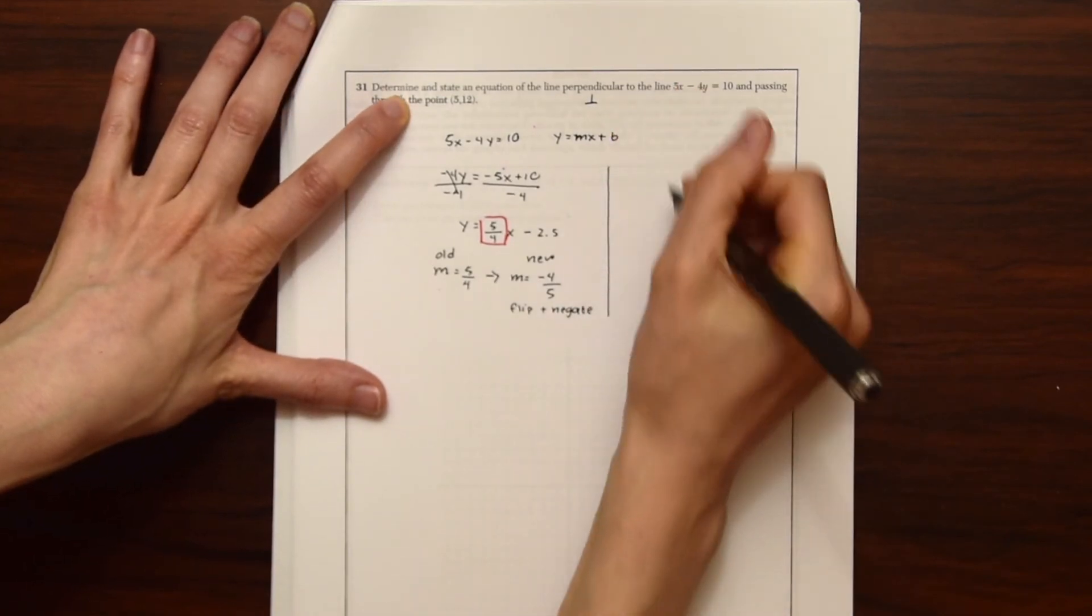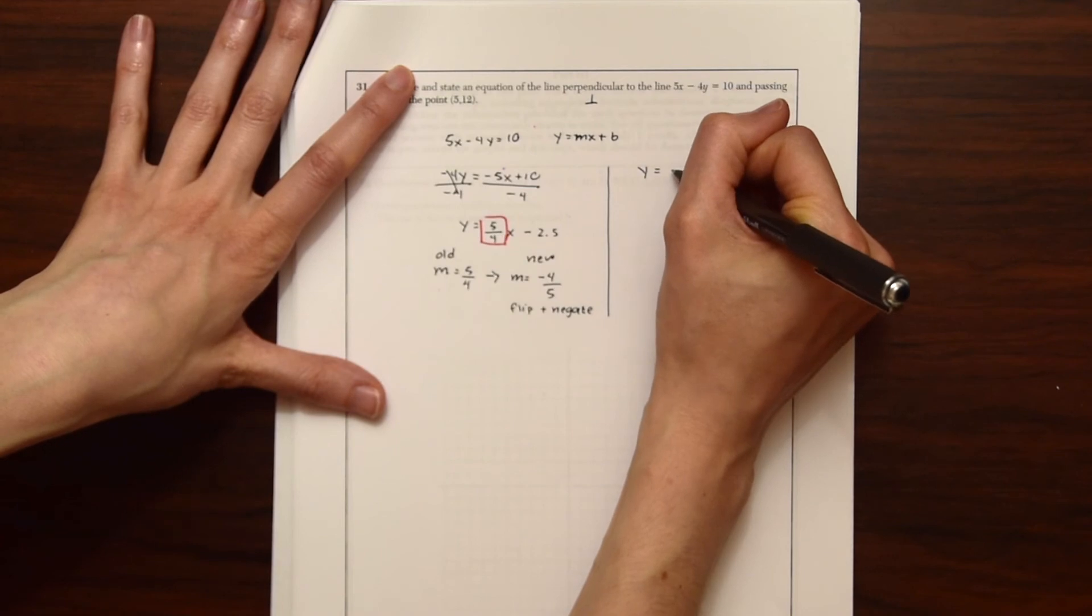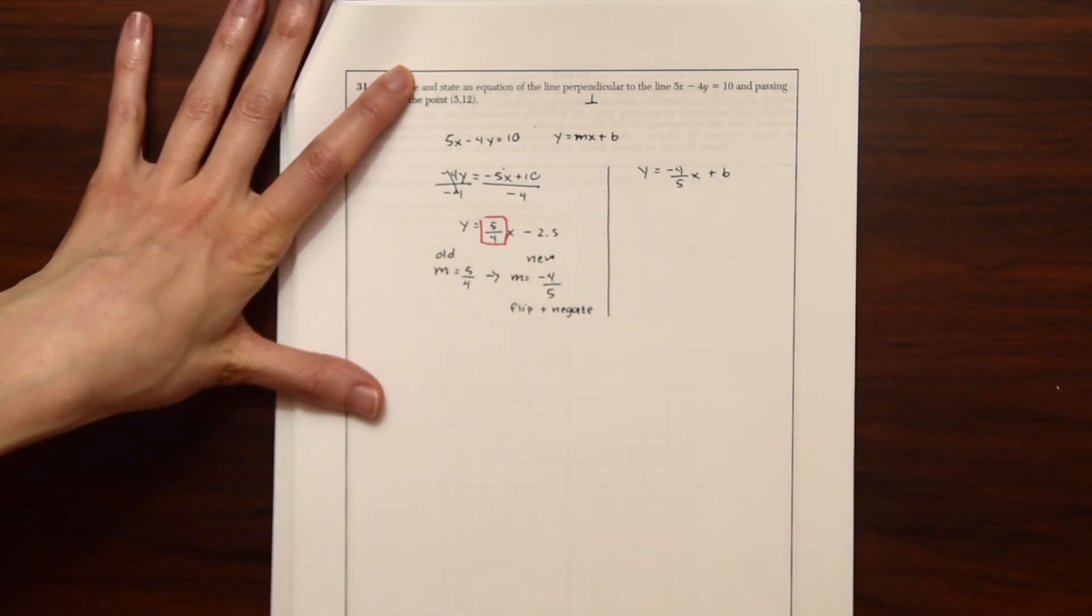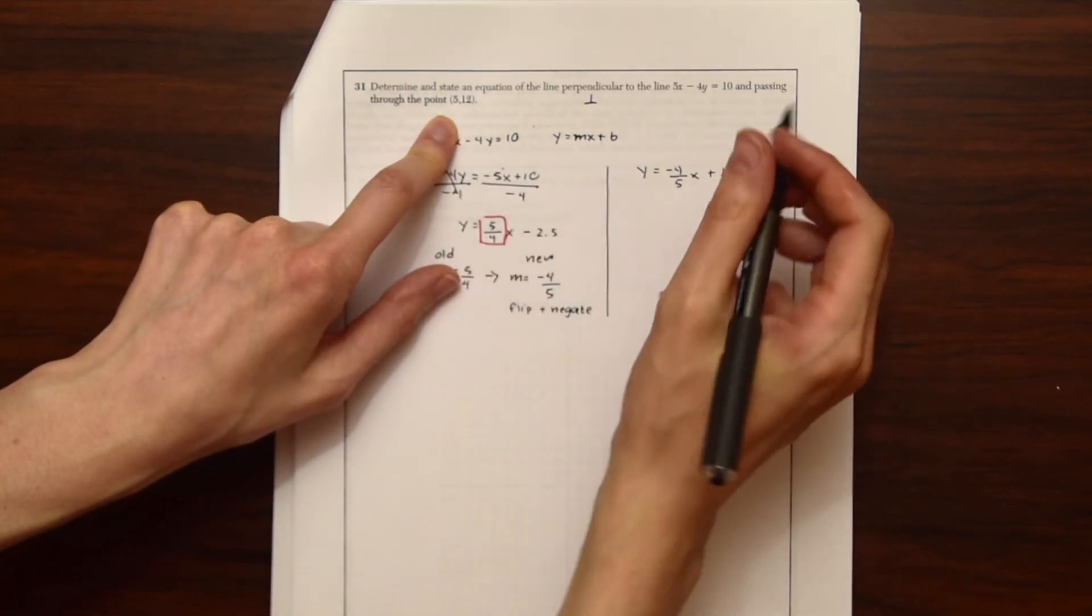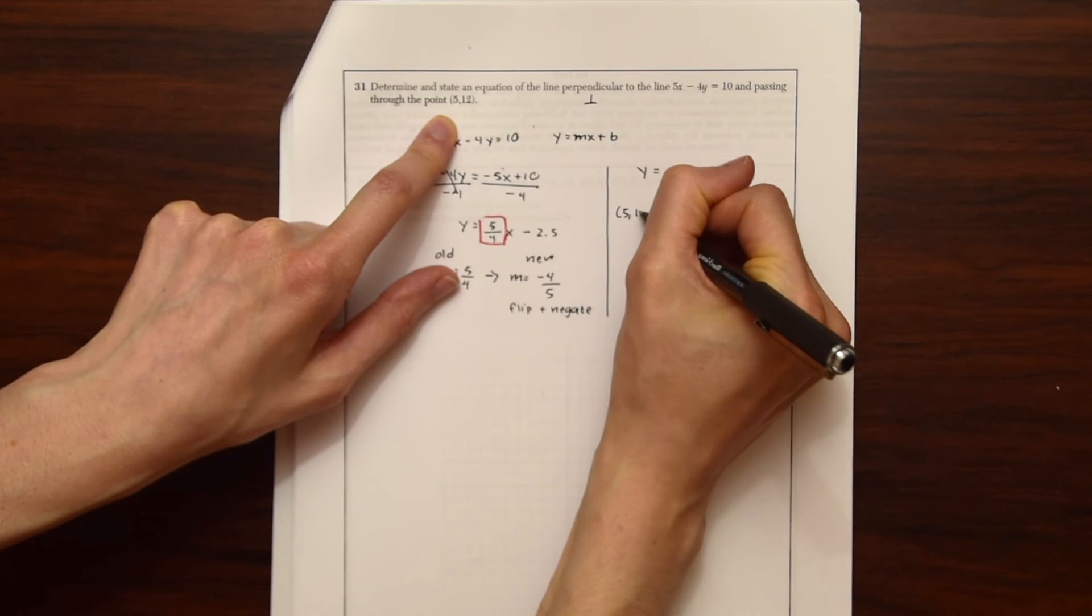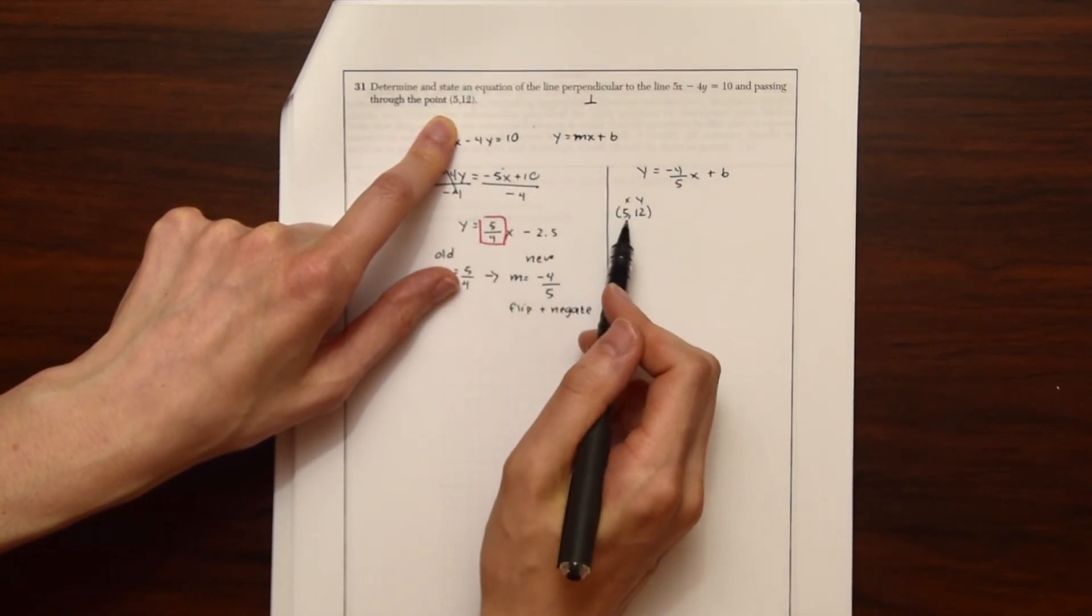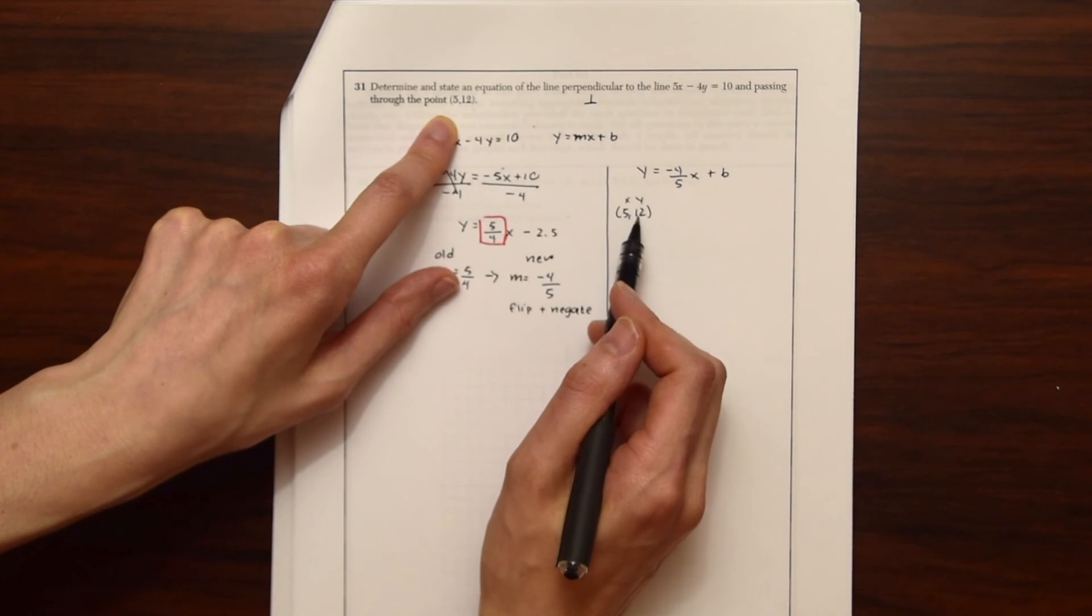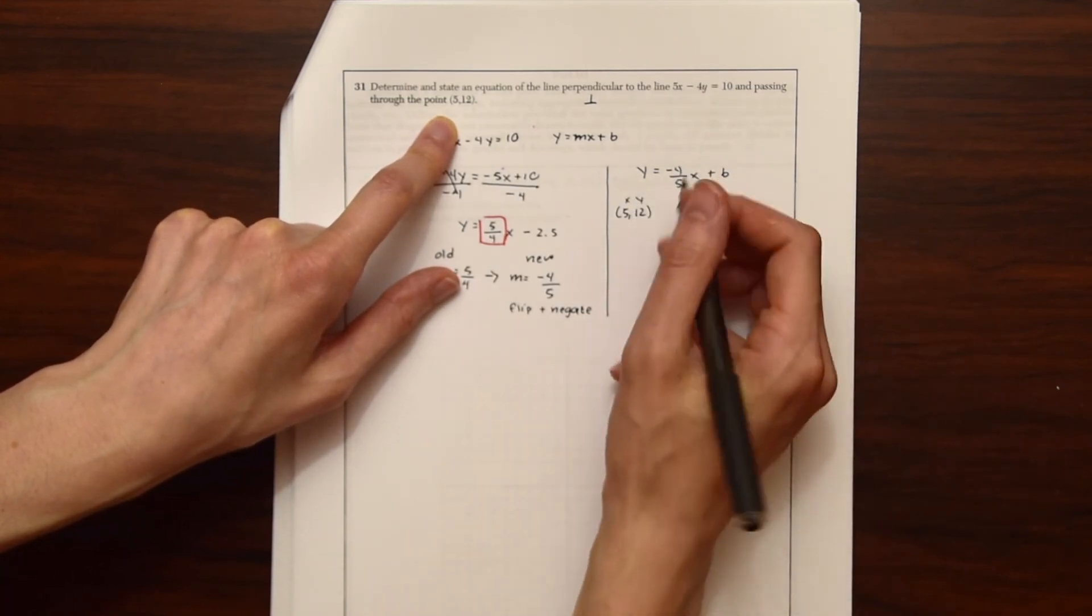So now we have this equation, Y equals negative 4 fifths X plus B. But we need to find out what that Y intercept is. And they give us this point, 5, 12, which is going to help us find that. So notice this is a coordinate with the value for X, five and a value for Y, which is 12.